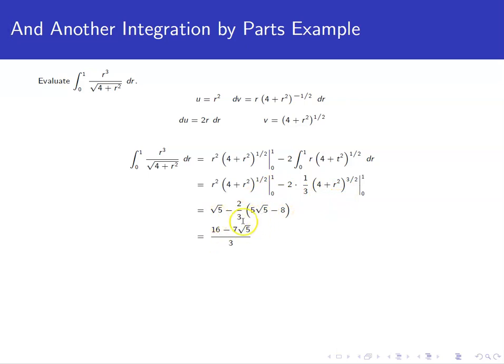So we can plug 0 in, plug 1 in, subtract as indicated, and simplify. And you get to the final answer of 16 minus 7 root 5 over 3.